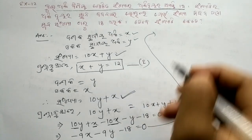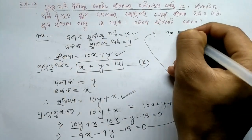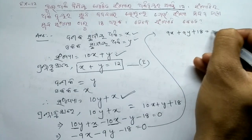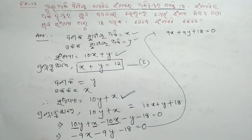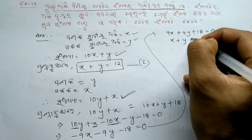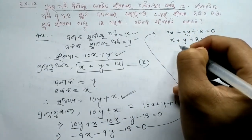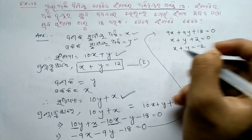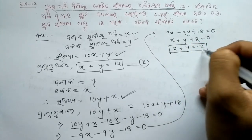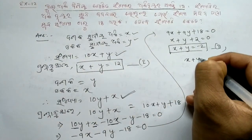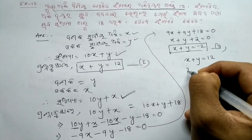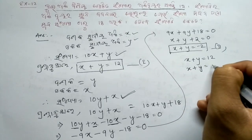Taking minus 9 common: minus 9 times (x plus y plus 2) equals 0. Simplifying gives x plus y plus 2 equals 0, or x plus y equals minus 2. This is our second equation. So Equation 1 is x plus y equals 12, and Equation 2 is x plus y equals minus 2.